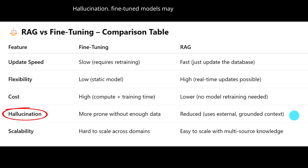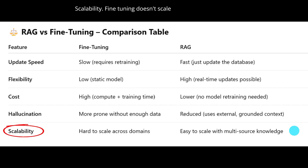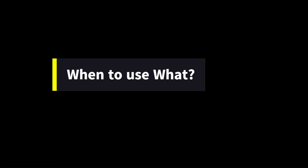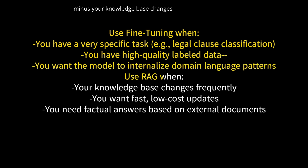Hallucination: fine-tuned models may hallucinate, especially with limited data; RAG reduces hallucinations by retrieving grounded external content before generating responses. Scalability: fine-tuning doesn't scale well across multiple domains; RAG is easy to scale — you can add more data sources without retraining the model. Use fine-tuning when you have a very specific task like legal clause classification, high-quality labeled data, and want the model to internalize domain language patterns. Use RAG when your knowledge base changes frequently, you want fast low-cost updates, and you need factual answers based on external documents.